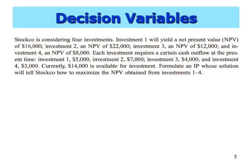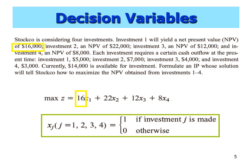Now we need to define what the x variables represent. It's straightforward: we get $16,000 if we invest in investment 1, and obviously nothing if we don't. So the decision variables are simple 0-1 variables. xj = 1 if we invest at investment j, and xj = 0 if we do not. So x1, x2, x3, and x4 only take values of either 0 or 1 — this is a 0-1 integer programming problem.